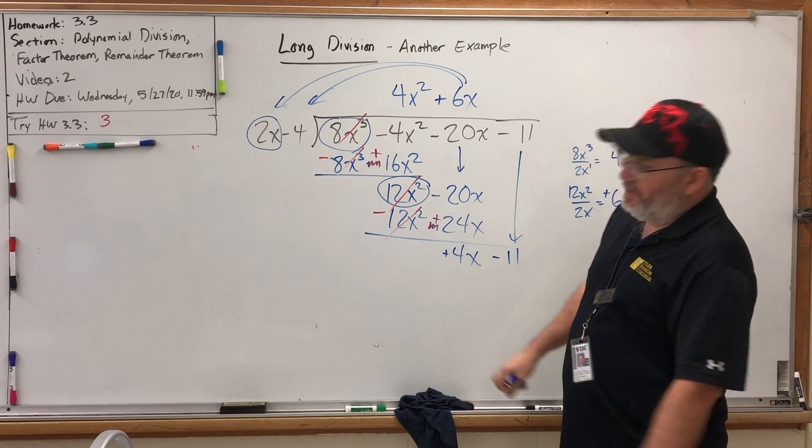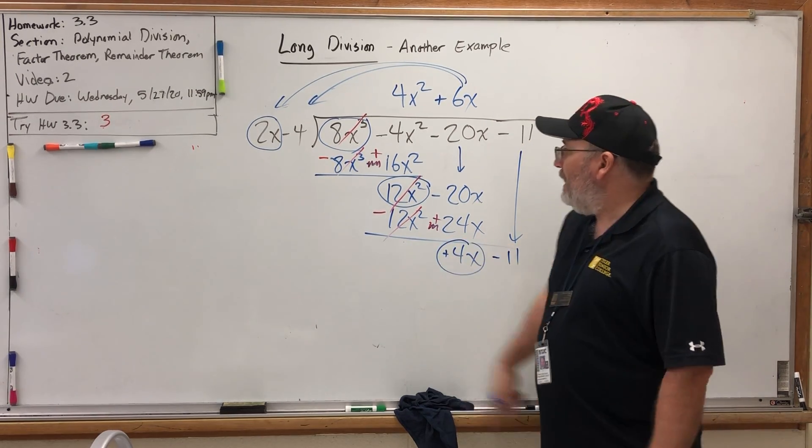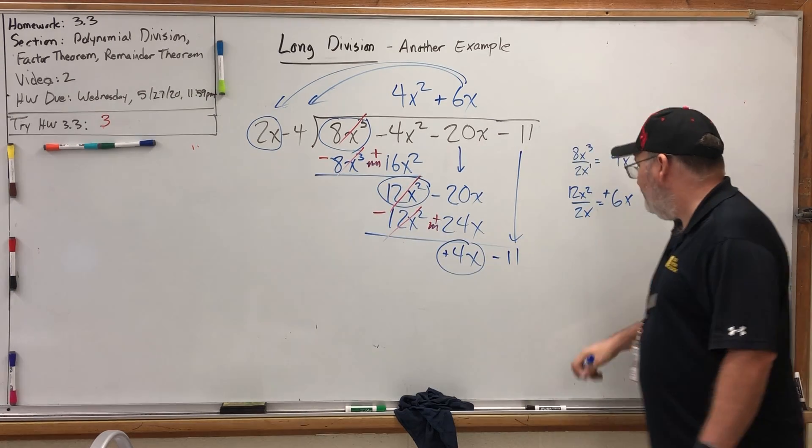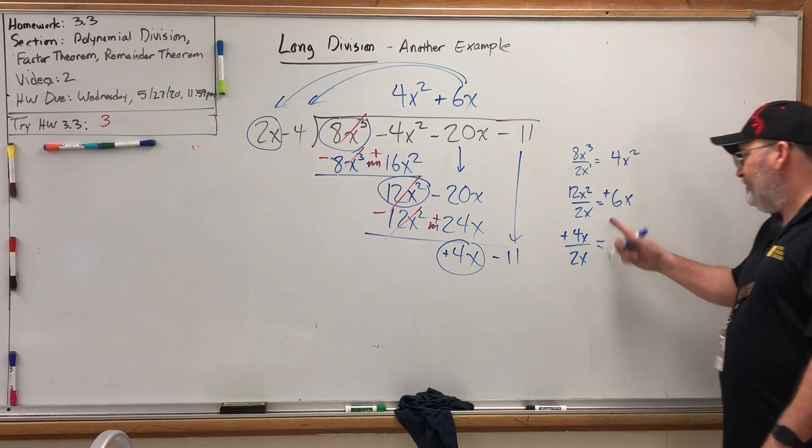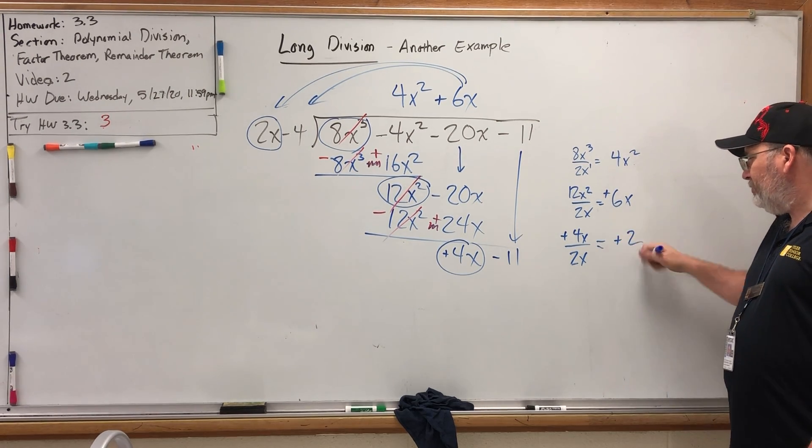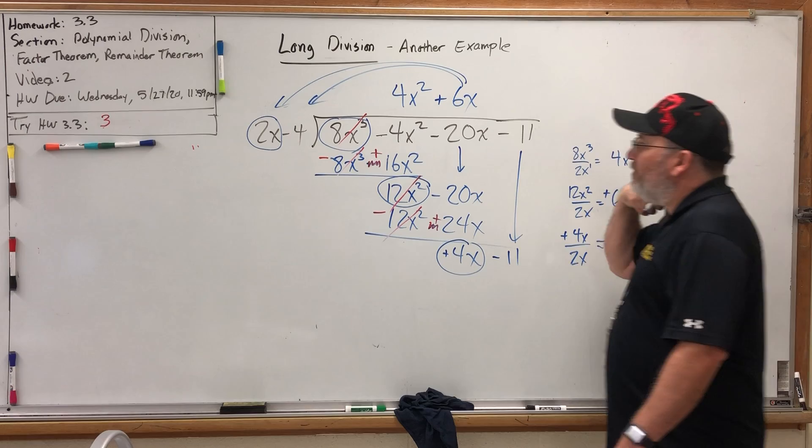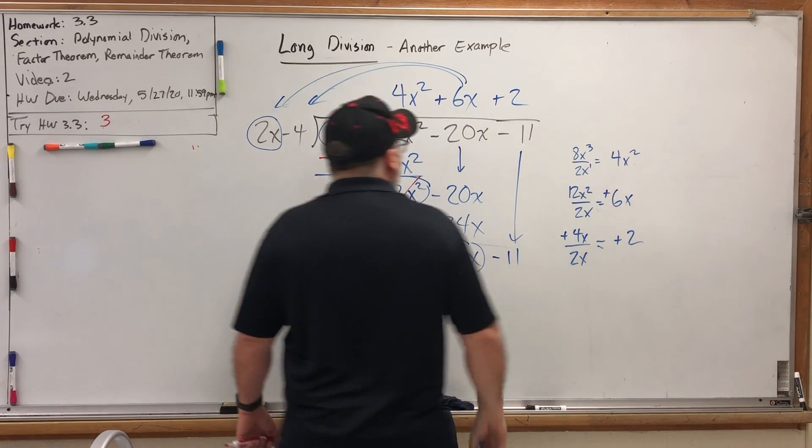Let's do it one more time. How many times does 2x go into positive 4x? Well, if I put positive 4x over 2x, positive 4 divided by 2 is positive 2. And the x is cancelled. So the last term in the quotient is positive 2.